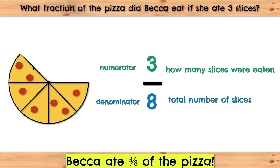Now, how many slices are still left? We can say that one, two, three, four, five — five out of eight total slices — so five-eighths of the pizza are still left.